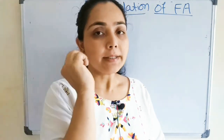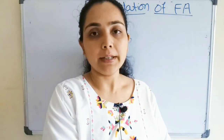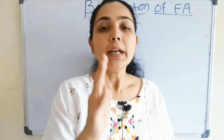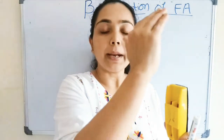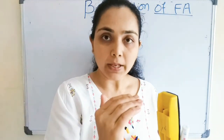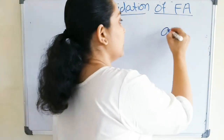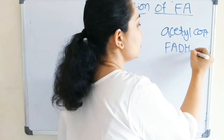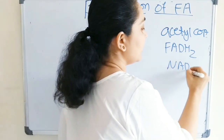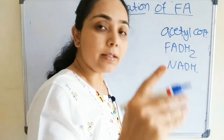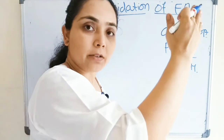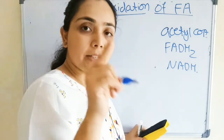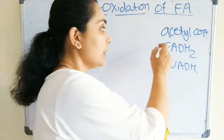First we will see what is the definition of beta oxidation of fatty acid and why this name has been given. Beta oxidation of fatty acid is actually the catabolic process where the breakdown of the fatty acid takes place, and ultimately we will get products like acetyl-CoA, FADH2, and NADH. It is a catabolic process where the oxidation of fatty acid takes place.